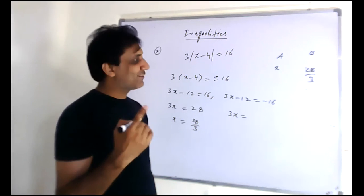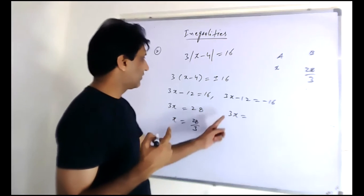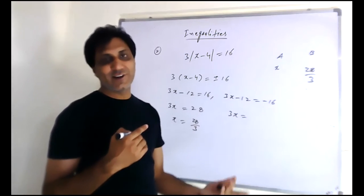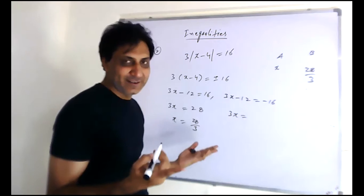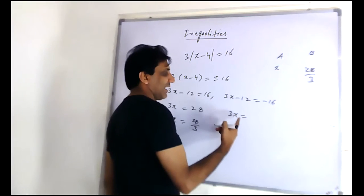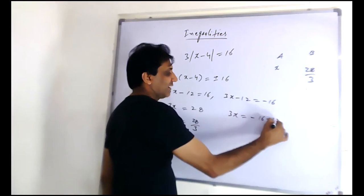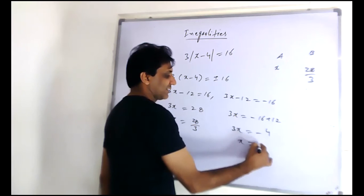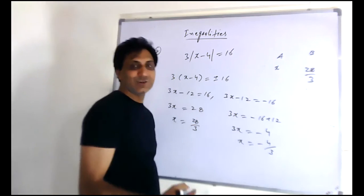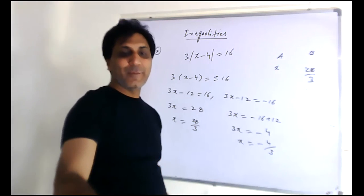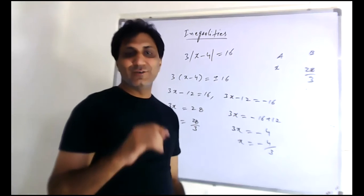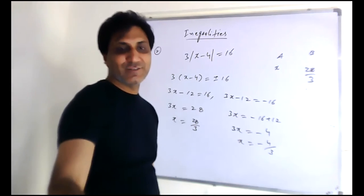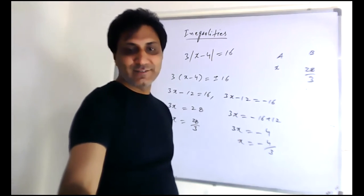When you are getting two different answers, you say that you cannot determine - it's D. But again, I am solving the other case. 3x equals minus 4, so x equals minus 4 over 3. We have two values, a positive and a negative value. The question does not specify whether x is positive or negative.